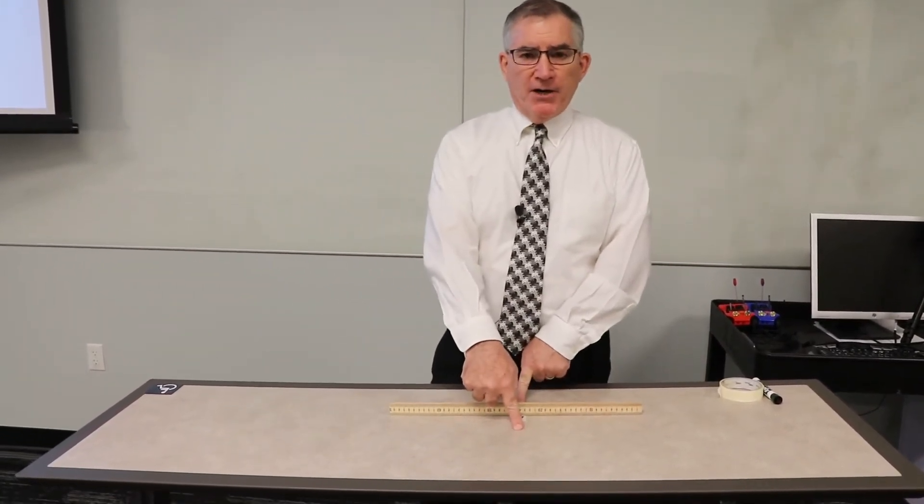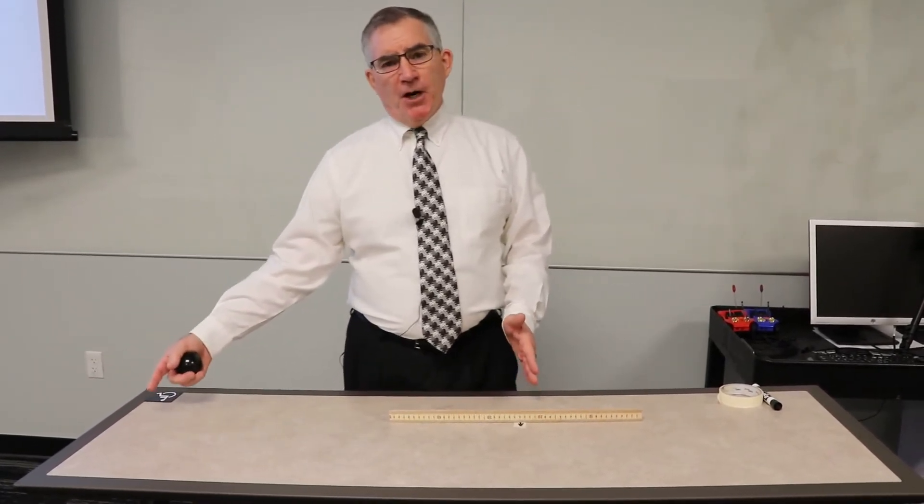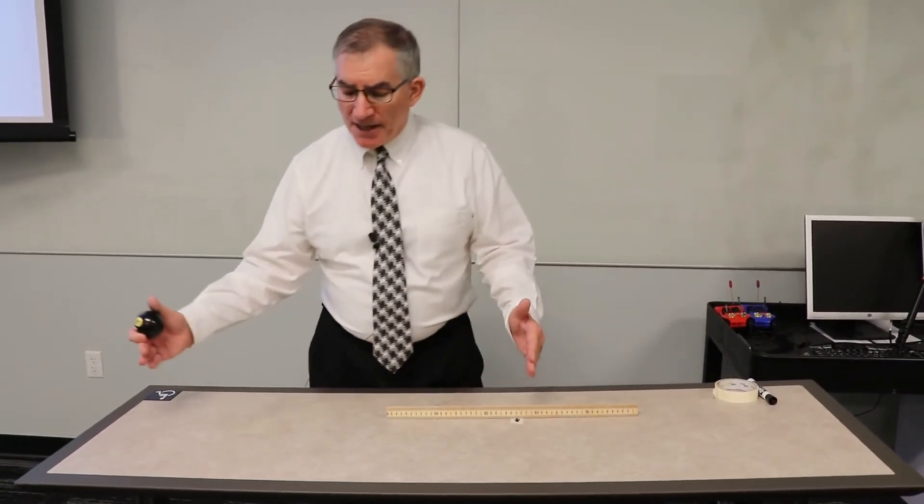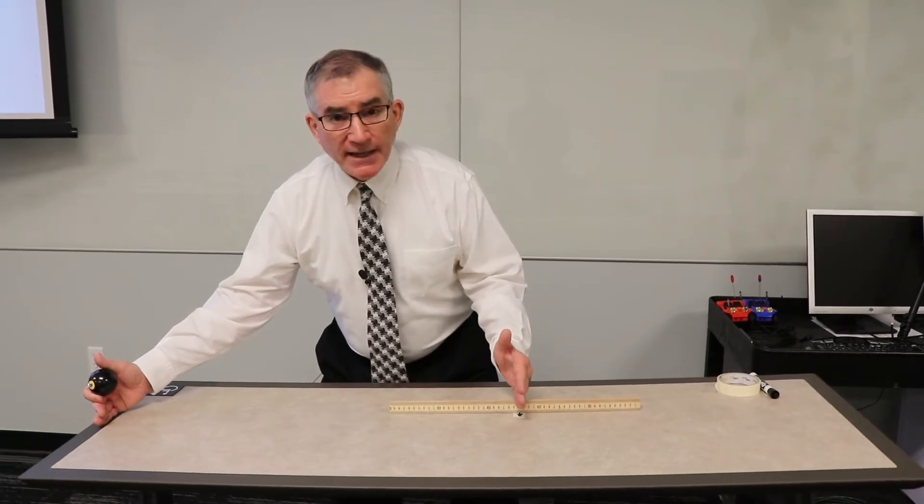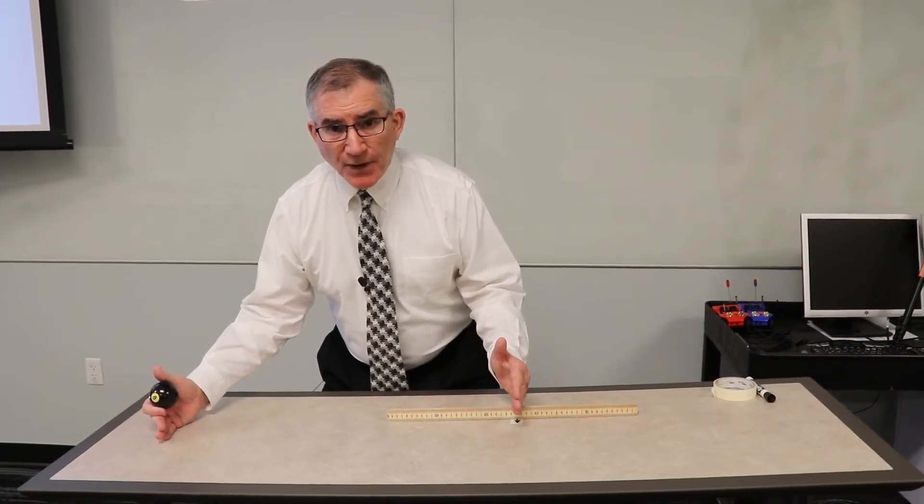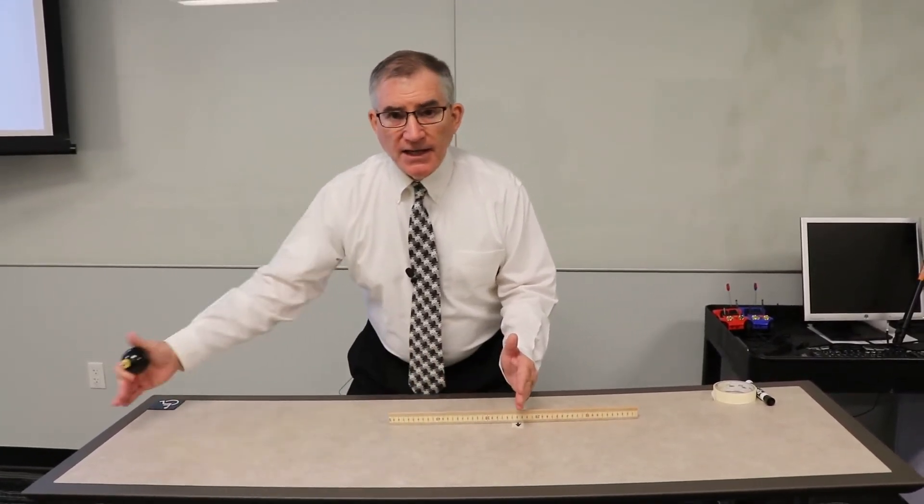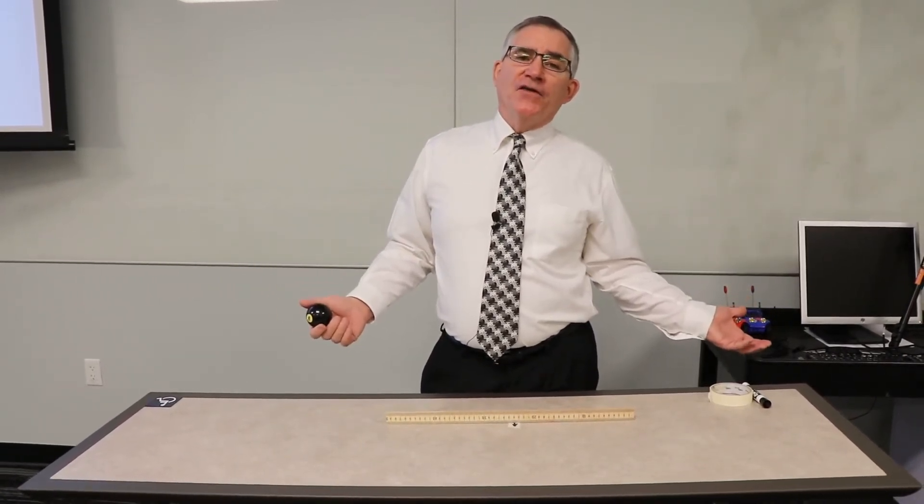And just get a good region. Like if this is your middle right here, you want to make sure you got a good distance down here. Because what you want to do is you're going to go through the frames when you get all the frames and you're going to calculate the average velocity from this point to this point. And then you're going to do it from this point to this point and this point to that point and go all the way here and get like 10 measurements.